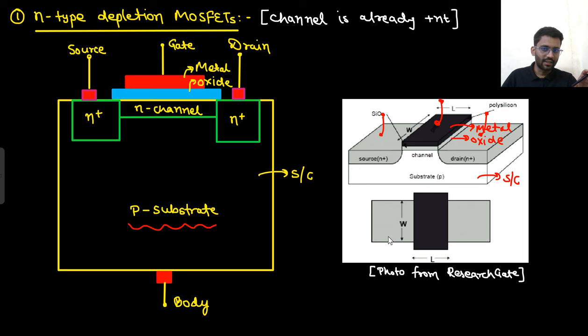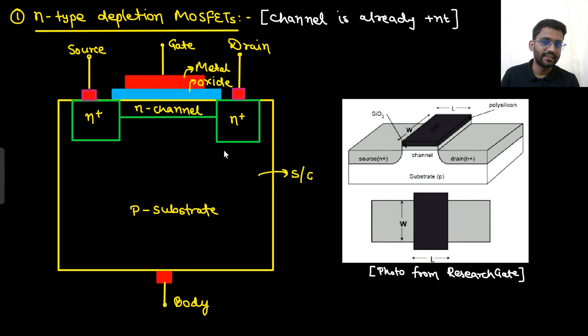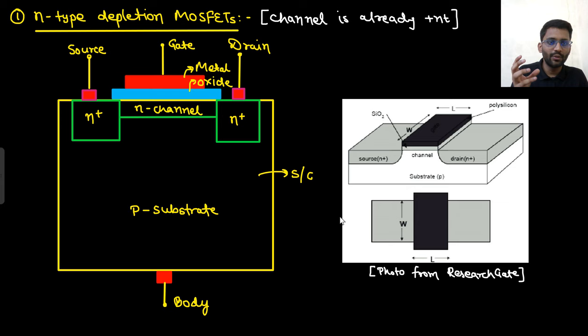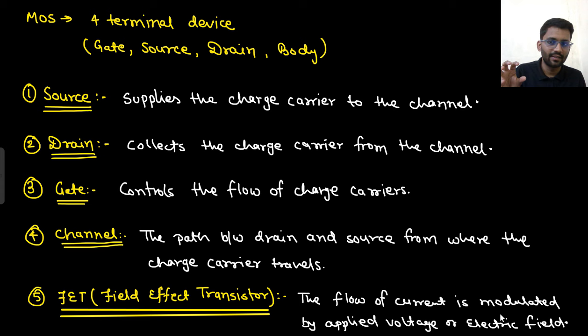The length L and width W of the channel are visible in the structure diagram. The metal oxide semiconductor structure explains the name MOSFET. The three key nodes are gate, drain, and source. Source supplies the charge carriers to the channel, drain collects the charge carriers from the channel, and gate controls the flow of charge carriers.